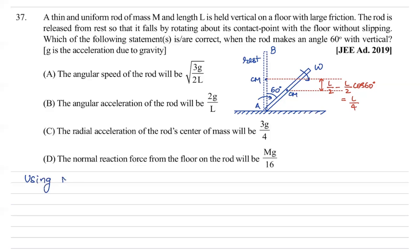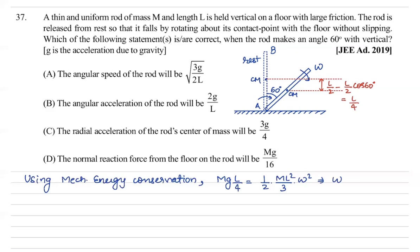Using mechanical energy conservation: loss in potential energy equals gain in kinetic energy. So mg·(l/4) = (1/2)·I·ω², where I = ml²/3 about one end. Solving for omega gives ω = √(3g/2l). So option A is correct.